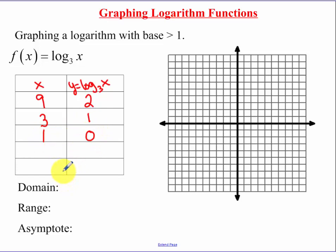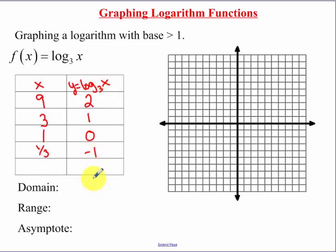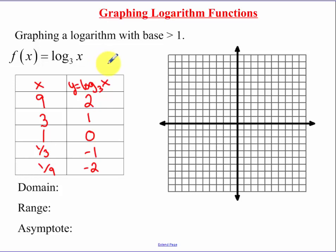Now the next are slightly more complicated. 1 third is technically a power of 3. So what you could do is you could look at it like that, and then when you plug in 1 third for x, you get negative 1 out. When I plug in 1 ninth for x, I get negative 2.